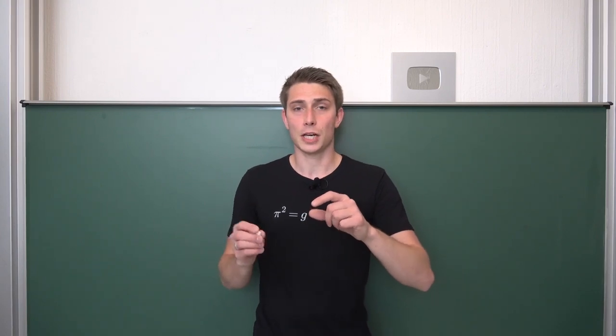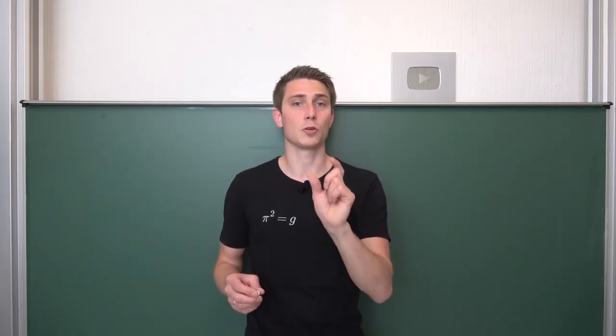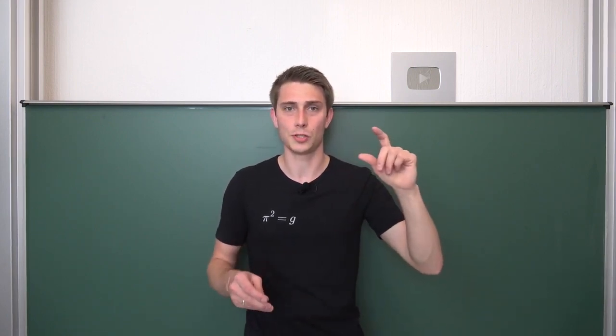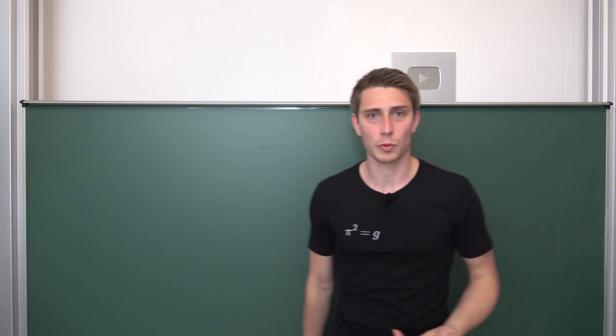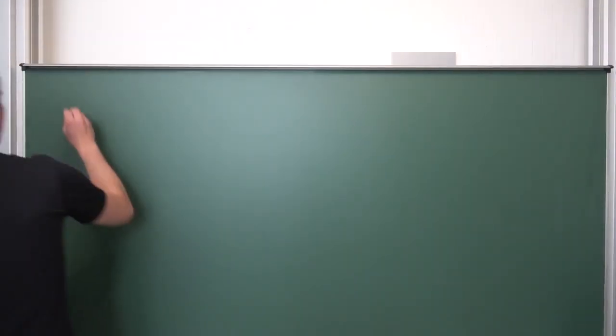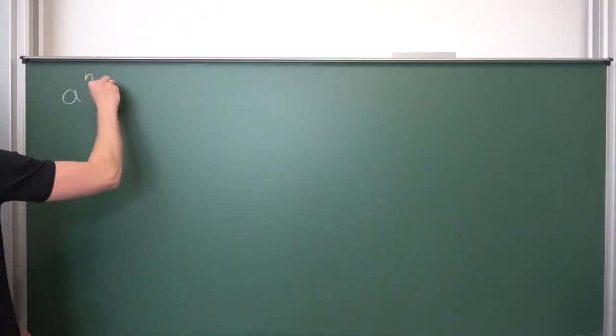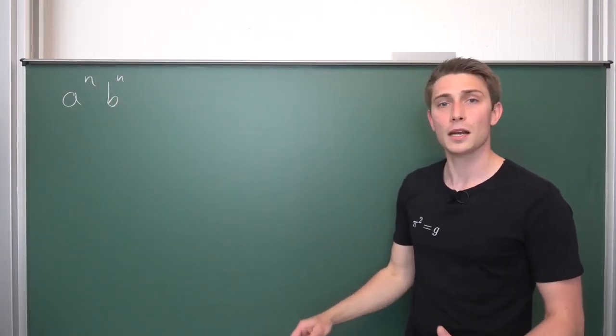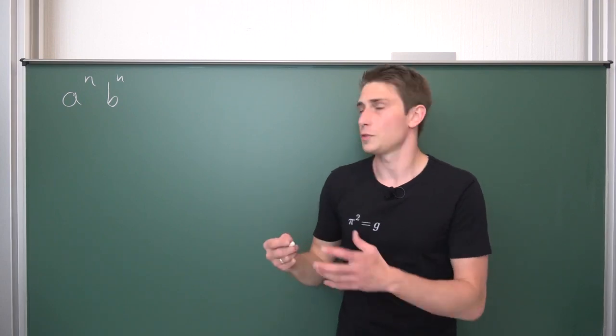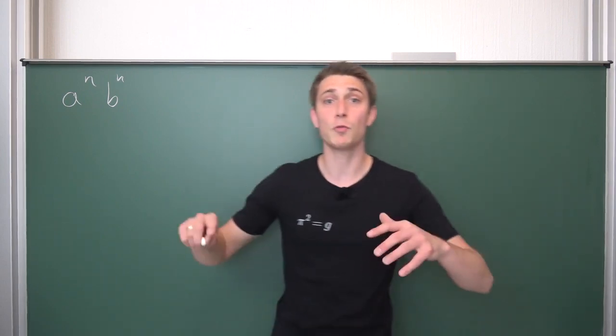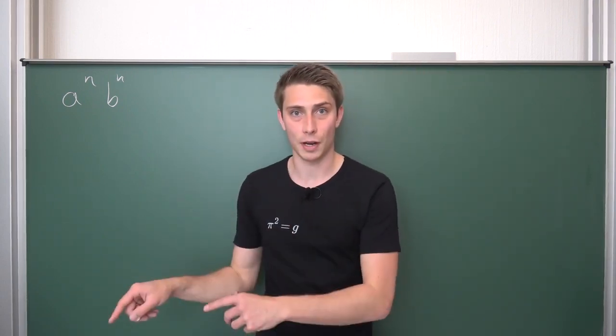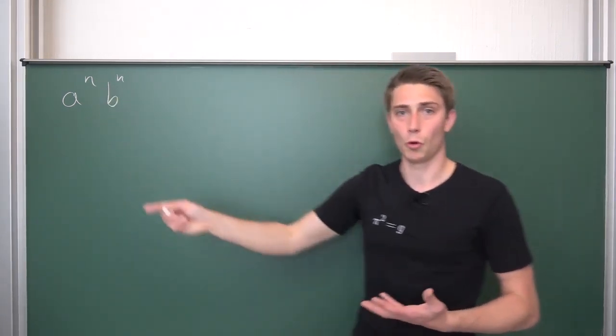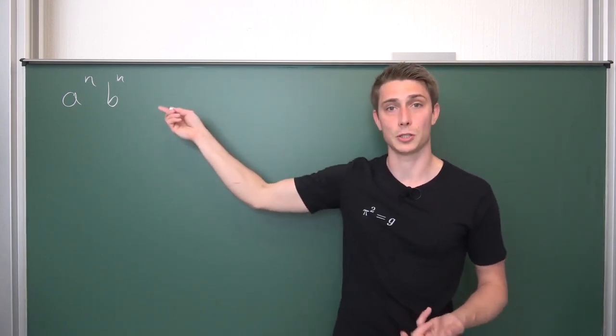It's like the reverse rule to the first exponentiation rule where we multiplied exponentials with the same base but different exponents together. There we had that we just kept our base, it's going to be preserved, but we are going to add our exponents together. This time, let's see what we are going to get when we do this. a to the nth power times b to the nth power.